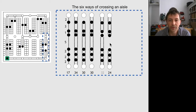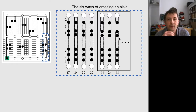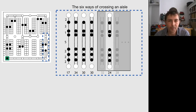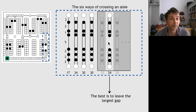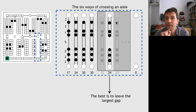There are many ways to stop in the middle, but one is always better than the others. The best is always to leave the largest gap — if you leave the largest gap, you save the maximum distance. So the algorithm only needs to consider the best representative. And you can also do nothing, which gives us six ways to cross a vertical aisle — a constant number. This is a key point.